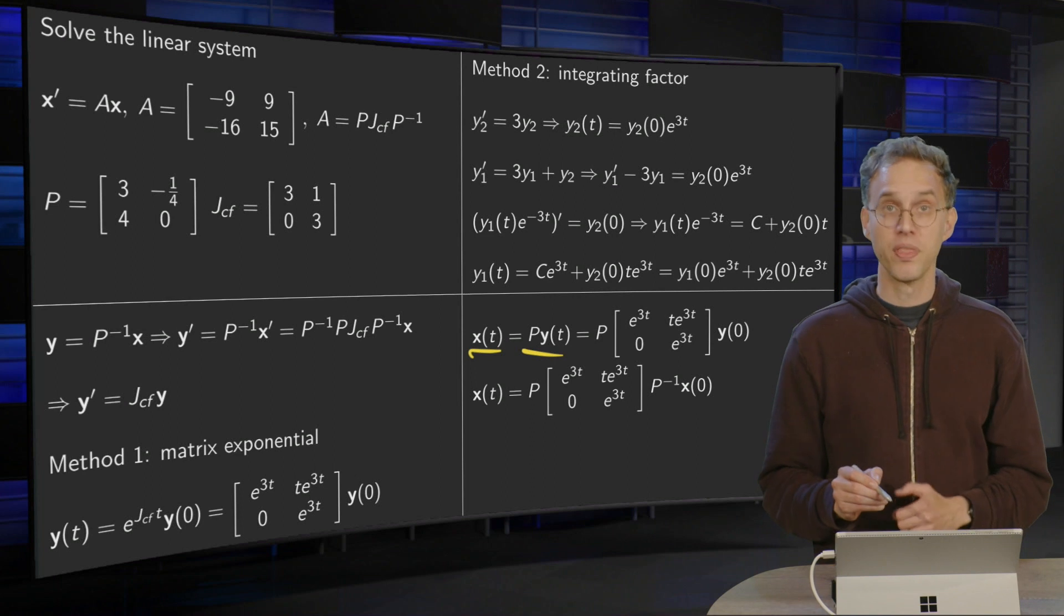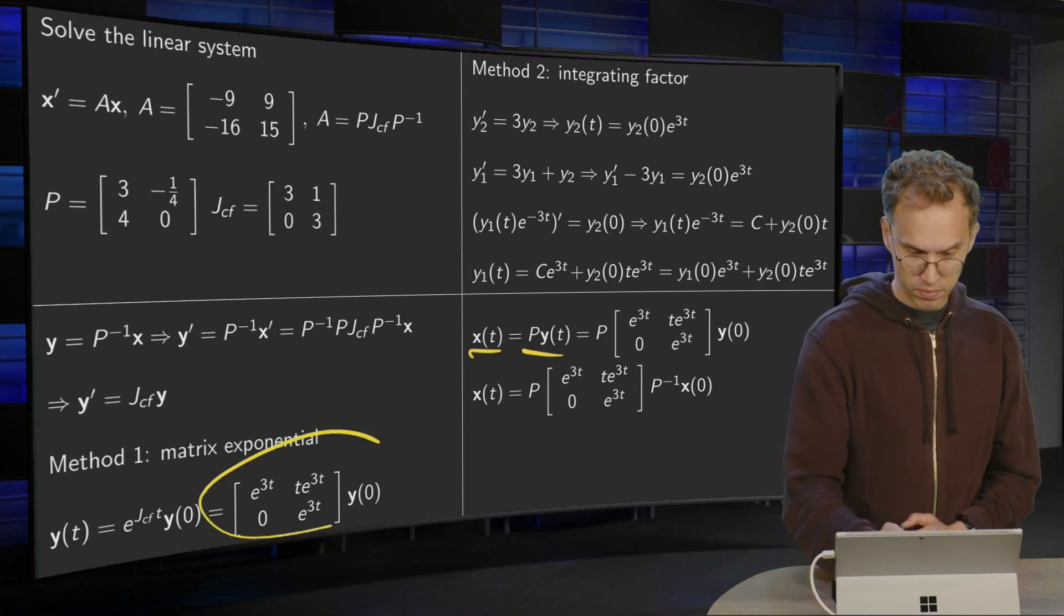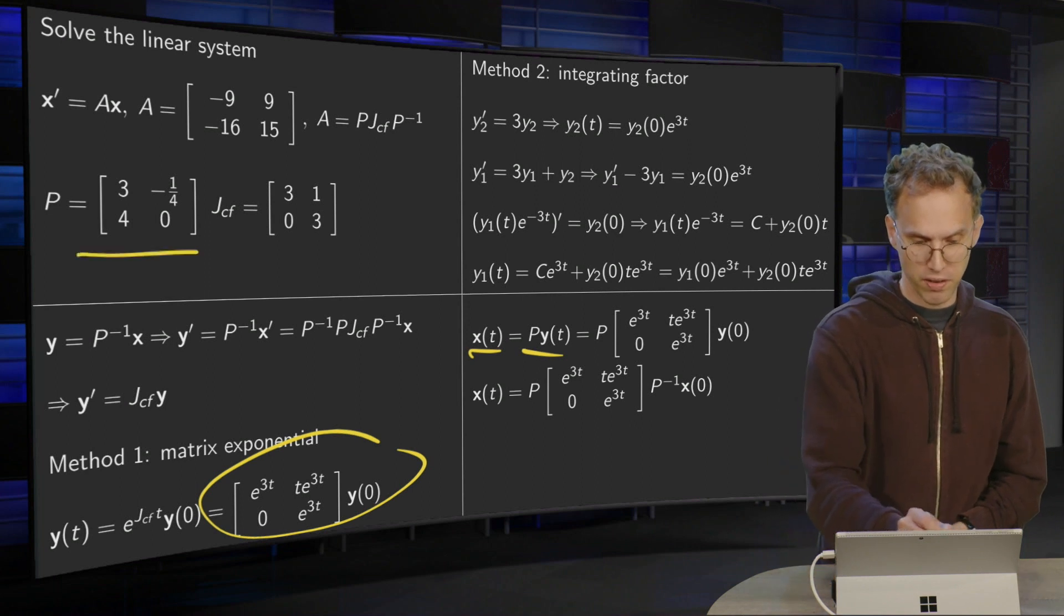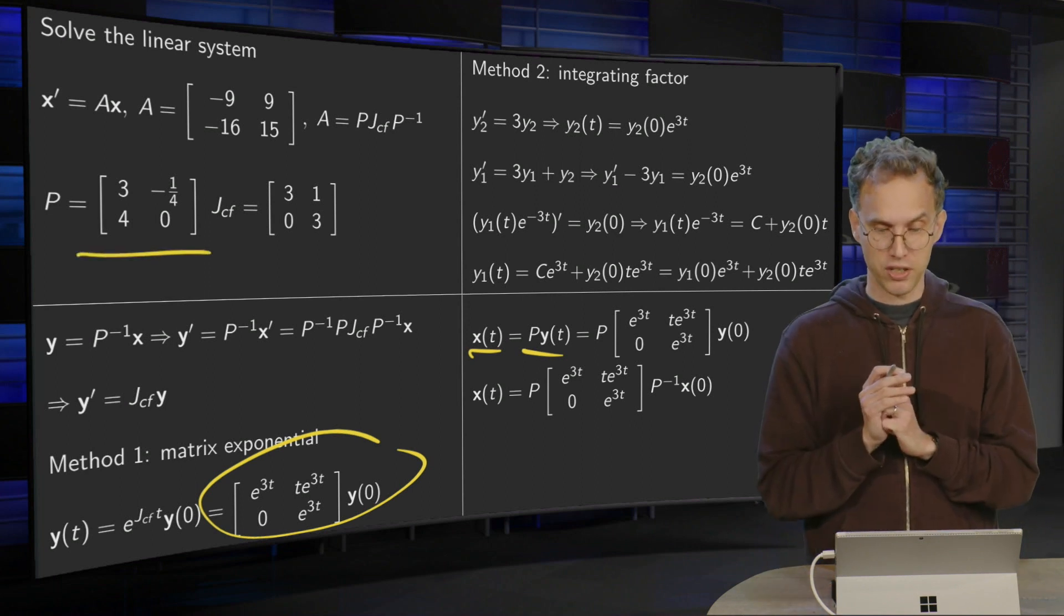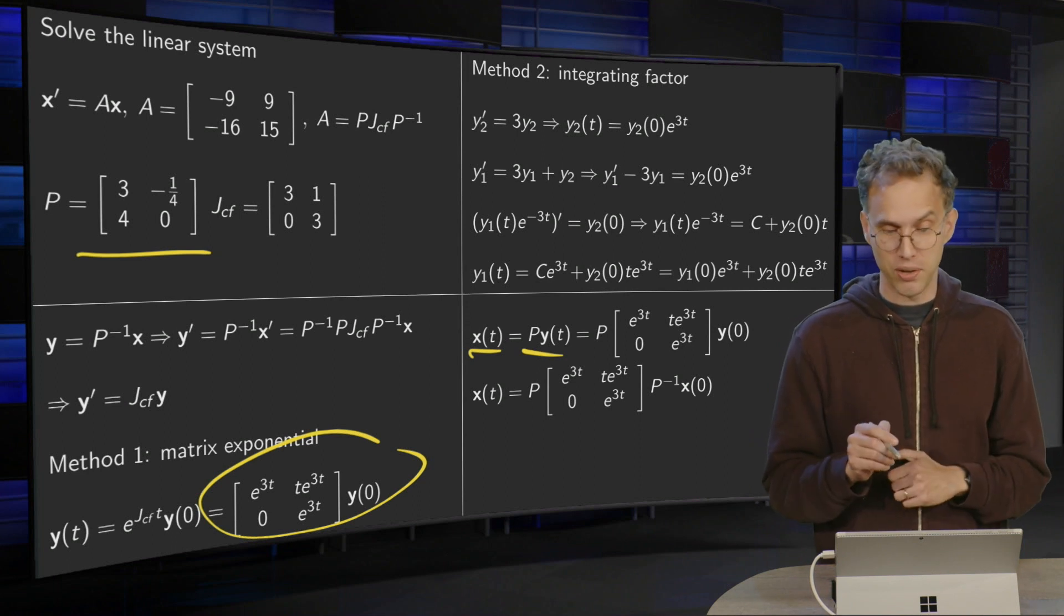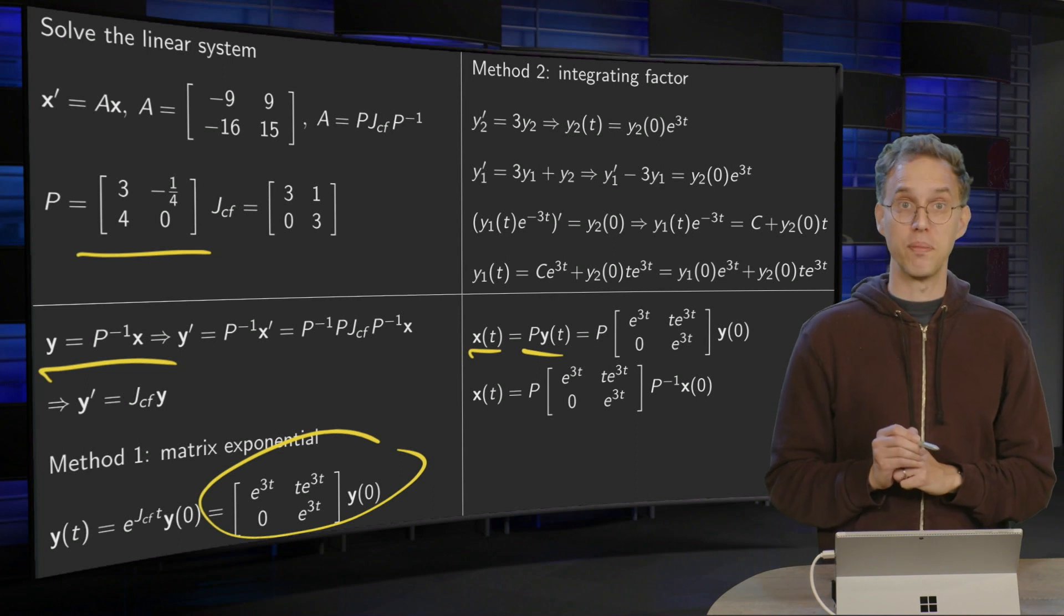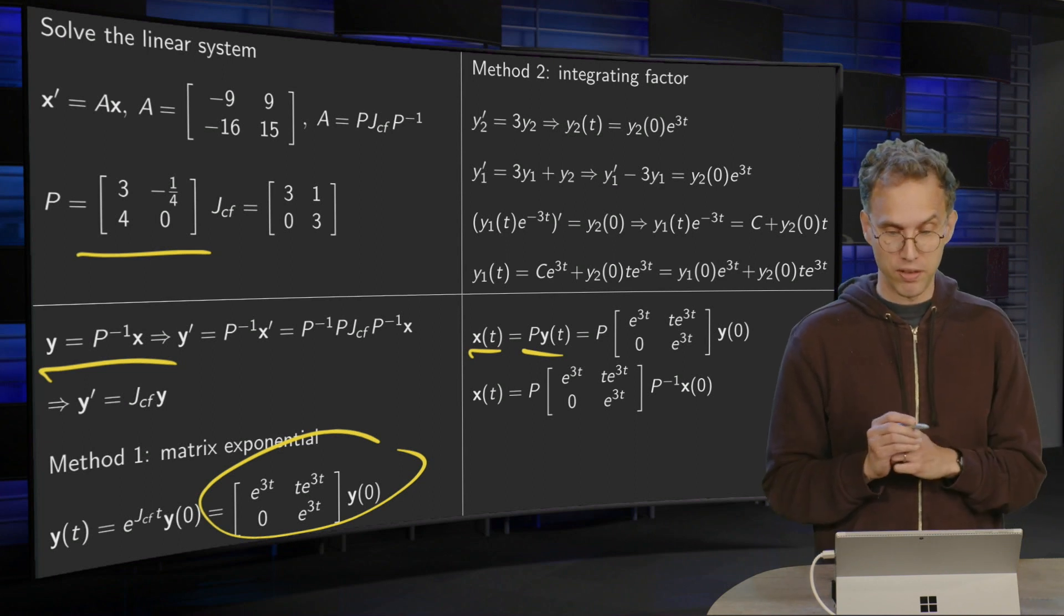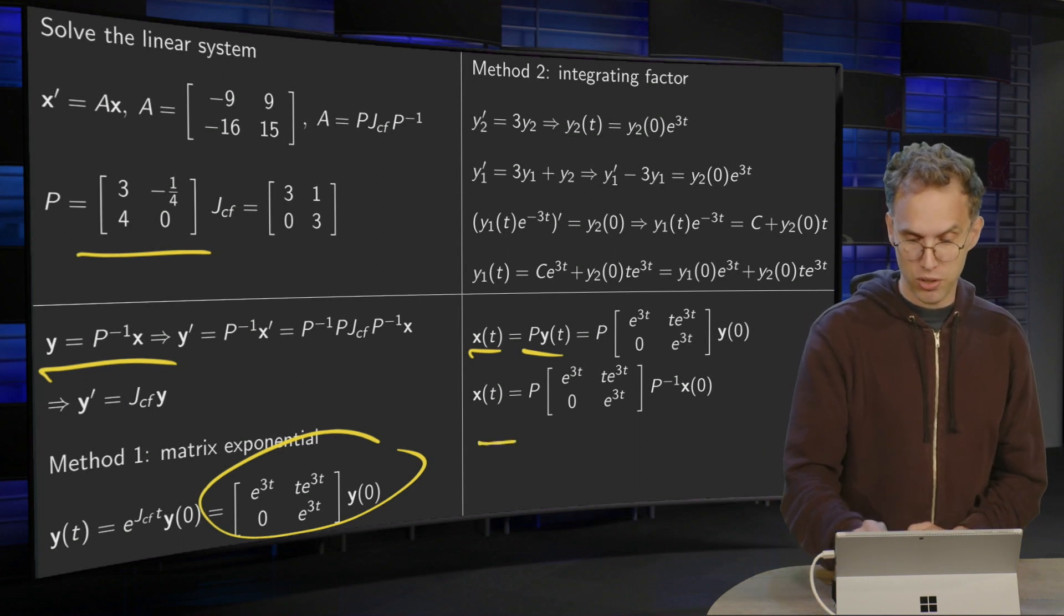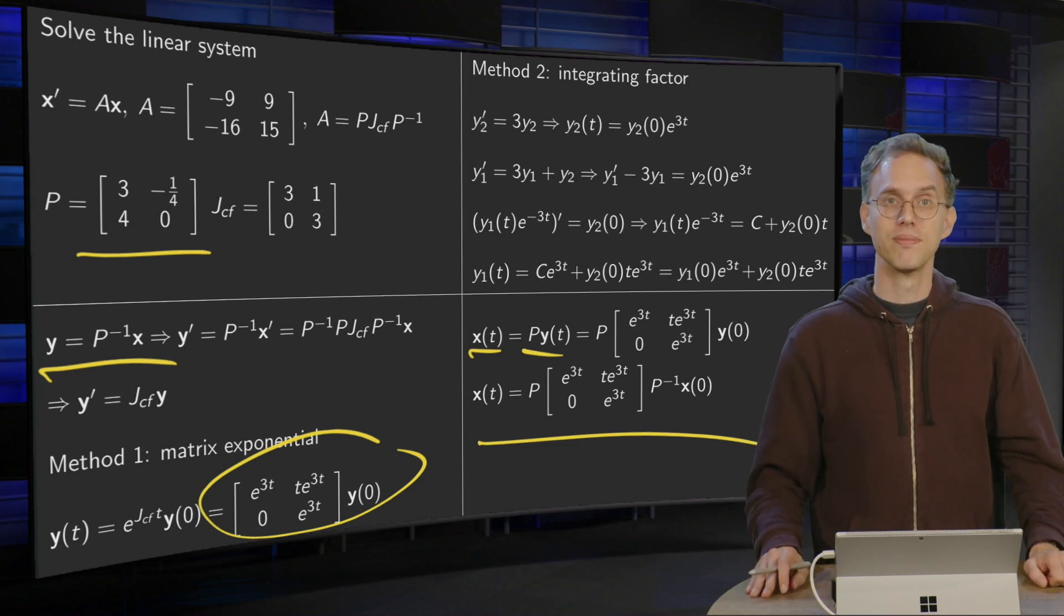We have our y over here. For example, P is given over there. So there you have your x of t. And if you want, you can express y(0) in terms of x(0). So y and x are related via P. So y(0) equals P inverse times x(0). So this is your solution fully only in terms of x.